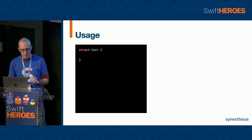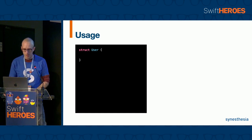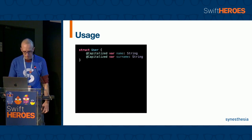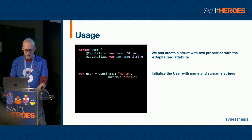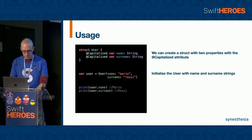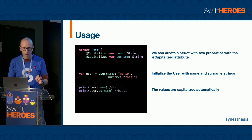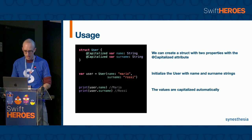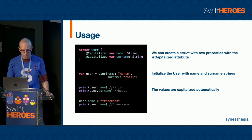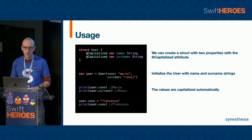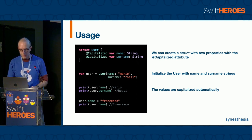We can now implement a struct with two properties annotated with Capitalized parameters. Initialize the User struct with the name and surname strings, and then we can print the values of the user structure. The strings are automatically capitalized. We can also assign a new value to the name, and in this case the string is also automatically capitalized.